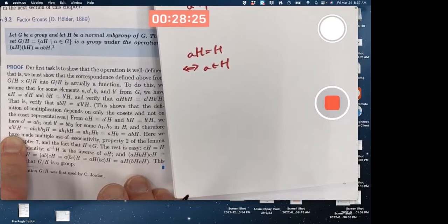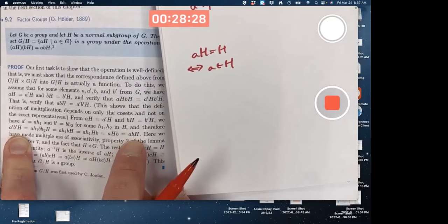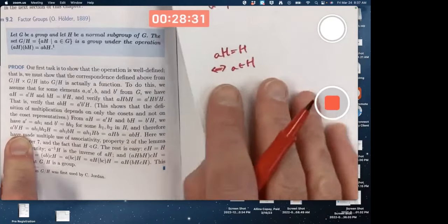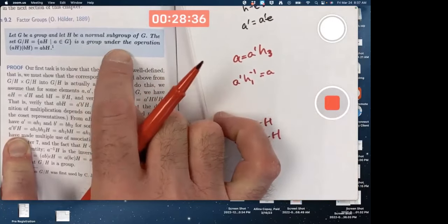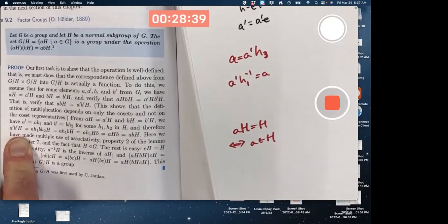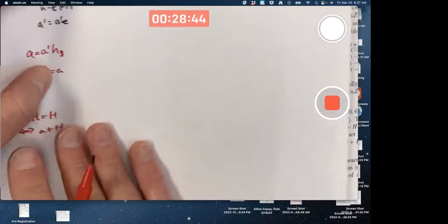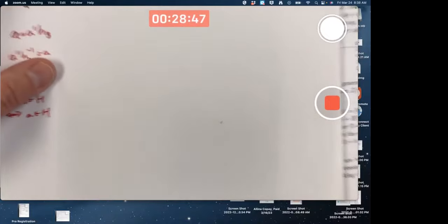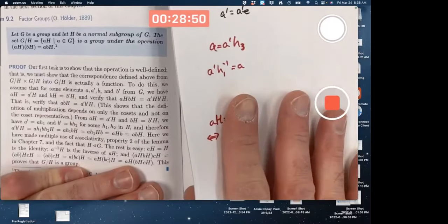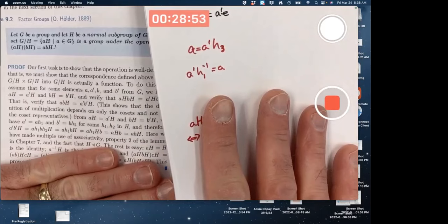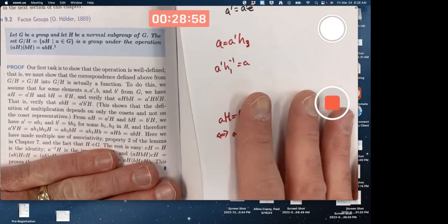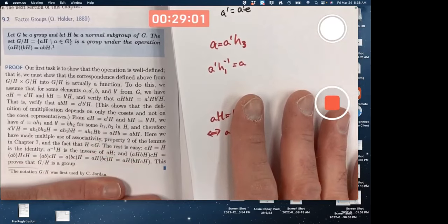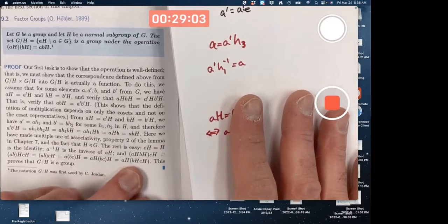So that proves it's well-defined. A prime B prime H equals ABH. Are we done? No, that's just part of the proof. We're trying to show it's a group under this operation. We've got to show the other properties of groups: associativity, identity, and inverses. Do we need to show associativity? Yeah, you should. We have made multiple uses of associativity. The rest is easy. The associativity is the last thing to do.